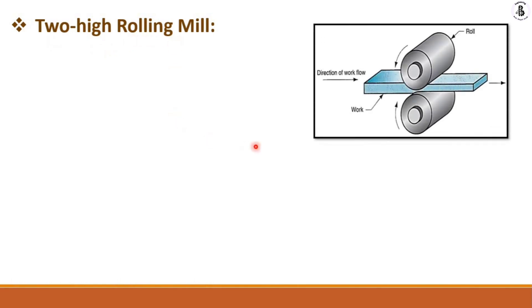According to the requirement of different shape and size, different rolling mills are selected. Starting with the first one — two-high rolling mills. As the name suggests, two pressurized rollers are used to convert raw material into the desired shape and size.